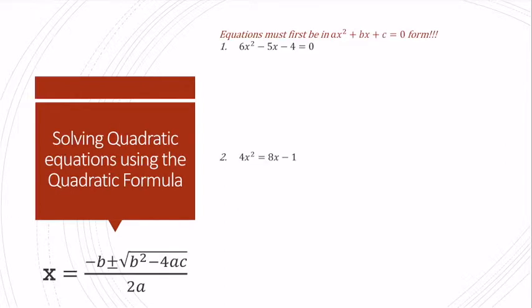So why don't we go ahead and solve the following quadratic equations using the quadratic formula. The first thing you need to note is that equations must be in standard form before we can use the quadratic formula. When in doubt, put a quadratic in standard form. I like to go ahead and label what everything is: a is 1, b is negative 5, and c is negative 4.